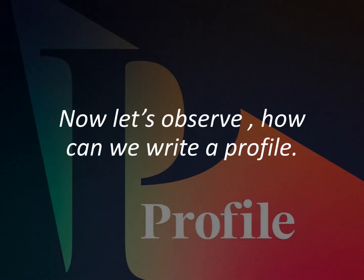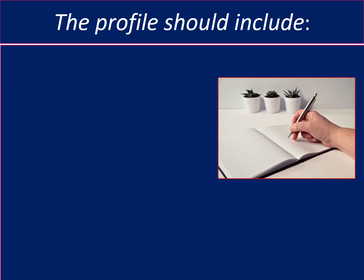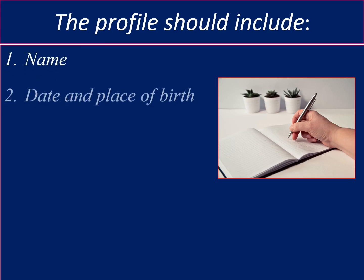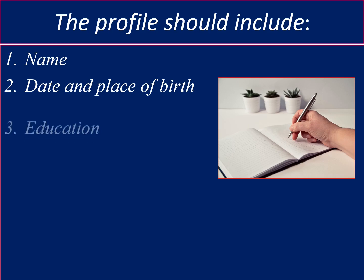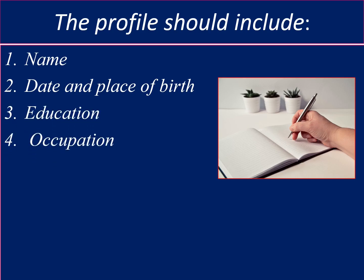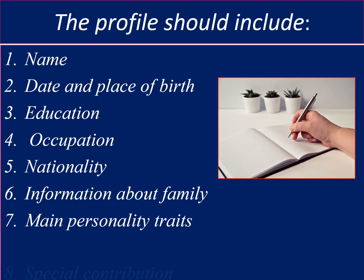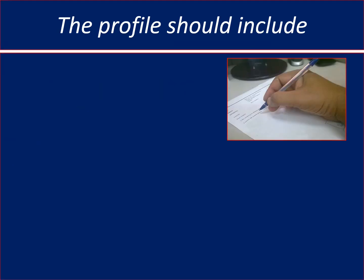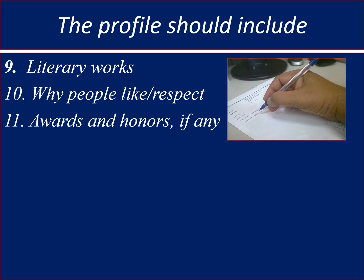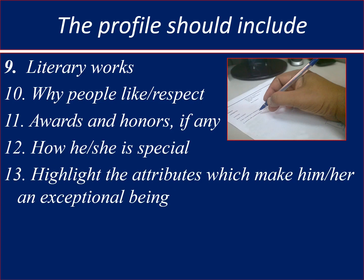Let us observe how we can write a profile. While writing the profile, you should include the following information: the name of the person, date of birth, place of birth, education, occupation, nationality, information about family, main personality traits, special contribution, literary works, why people like or respect them, awards and honors if any, how he or she is special, attributes which make him or her exceptional, and lastly, date of death.